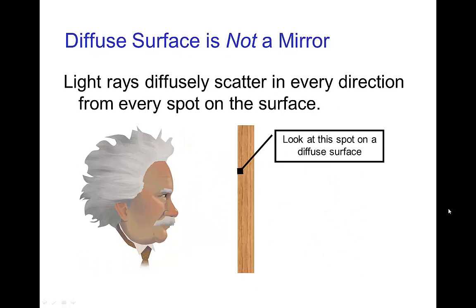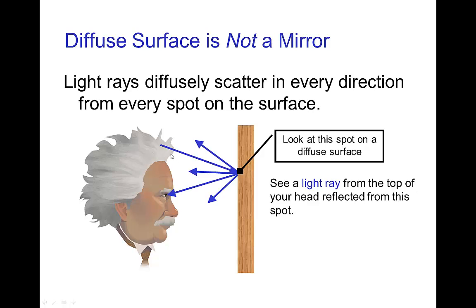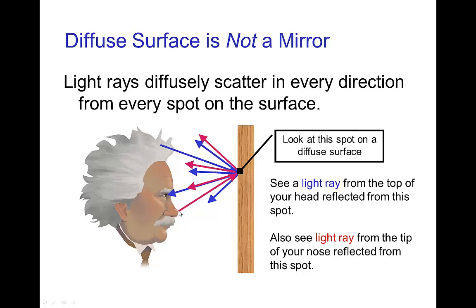Now, this also explains to us why a diffuse surface does not form a mirror reflection because if you are looking at that spot on the surface, you see a light ray which comes from the top of your head because light from the top of your head striking that spot is scattered in all directions. But light coming from your nose striking that spot, some of that light also enters your eye. So you see a blend of light coming from the top of your head, from your nose, from your forehead, from every part of your face. And so that mixture, you don't resolve any particular image on a diffuse surface.